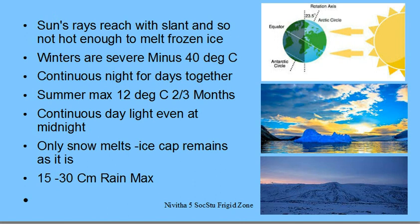So you have continuous day — land of the midnight sun — or continuous night. Rainfall is around 15 to 30 centimeters, which is about 10 to 12 inches. Snow melts but the ice cap remains as it is.